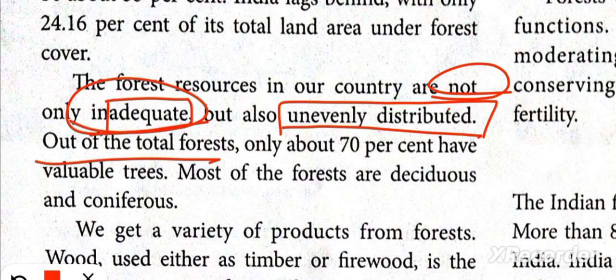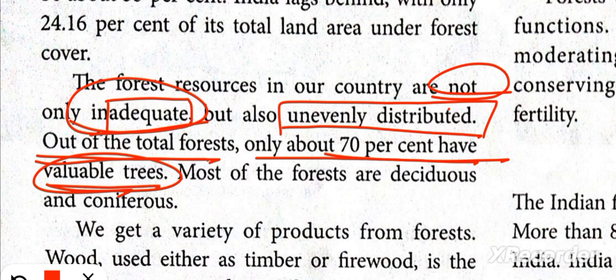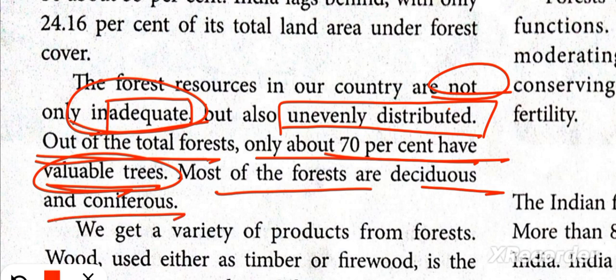Out of the total forest, only about 70% has valuable trees. Most of the forest is either deciduous or coniferous. So to summarize: our forest cover is firstly inadequate, secondly unevenly distributed, and of the total forest area, only 70% is useful, with most of it being deciduous or coniferous forest.